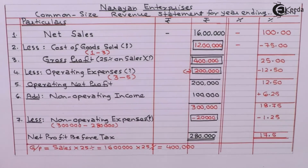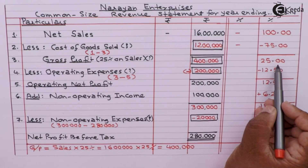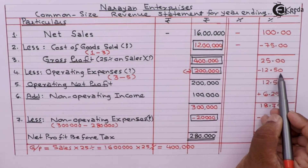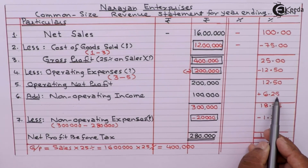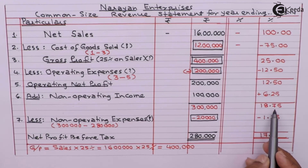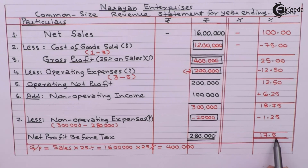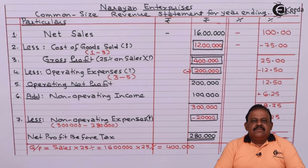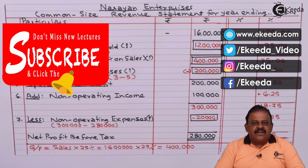We can verify our answer: net sales 100%, cost of goods sold minus 75%, giving gross profit 25%. Less operating expenses 12.5%, so 25 minus 12.5 equals 12.5%. Add non-operating income 6.25%, giving 18.75%. Less non-operating expenses 1.25%, giving 18.75 minus 1.25, and finally we arrive at 17.5%. In this question we have found the missing information and prepared the common size income statement. Thanks for watching this video — stay in tune with Ekida and subscribe to our channel.